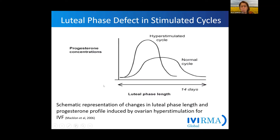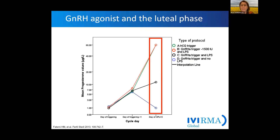This was already mentioned by Professor Saleh previously. In general, when we look at an IVF stimulated cycle, we have an altered luteal phase. In a normal cycle, we see standard progesterone concentrations. In a hyperstimulated cycle — meaning a controlled ovarian stimulation cycle — we have higher progesterone levels and a shorter length of the luteal phase. The reason for this is the influence of our feedback system by the high hormonal levels.